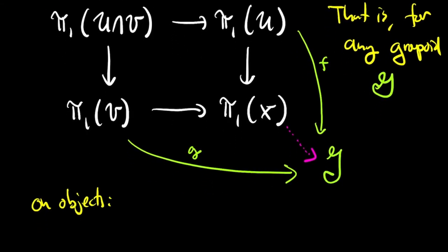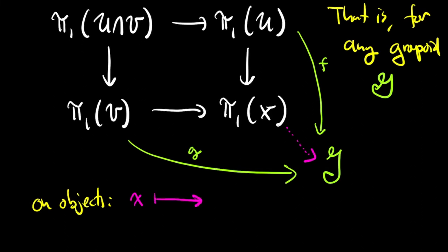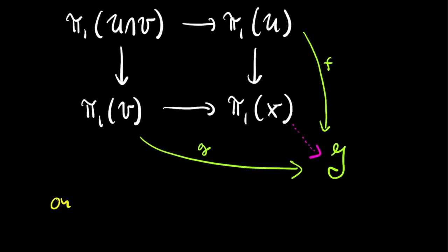On objects, that is points of X, it's easy to define the map. If X is in U, you just define it to be the image of the map, call it F, from U into G. If X is in V, you send X to the image of the map, call it G, from V into G. And if X is in the intersection, these two maps agree, so this definition is well defined. To define the map from π₁ X into the groupoid G on morphisms, let X and Y be two points in π₁ of X, and consider a path from X to Y. We have to send this path to a morphism in the groupoid G. Now there's no question about what to do if that path between X and Y lies entirely in U or in V. But to see the more general situation, let's take a step back and look at X decomposed as the union of two open sets U and V. And consider a path between a point little x and a point little y.